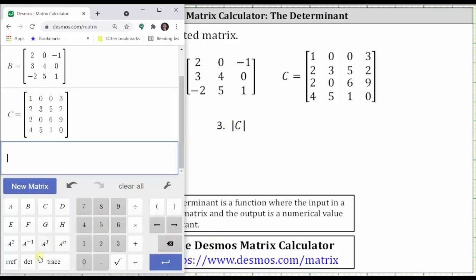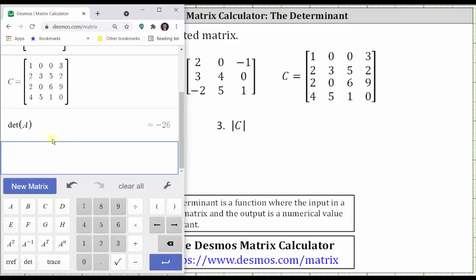To do this, we press DET below for determinant, then the matrix. Let's first find the determinant of matrix A, enter, which is negative 26.